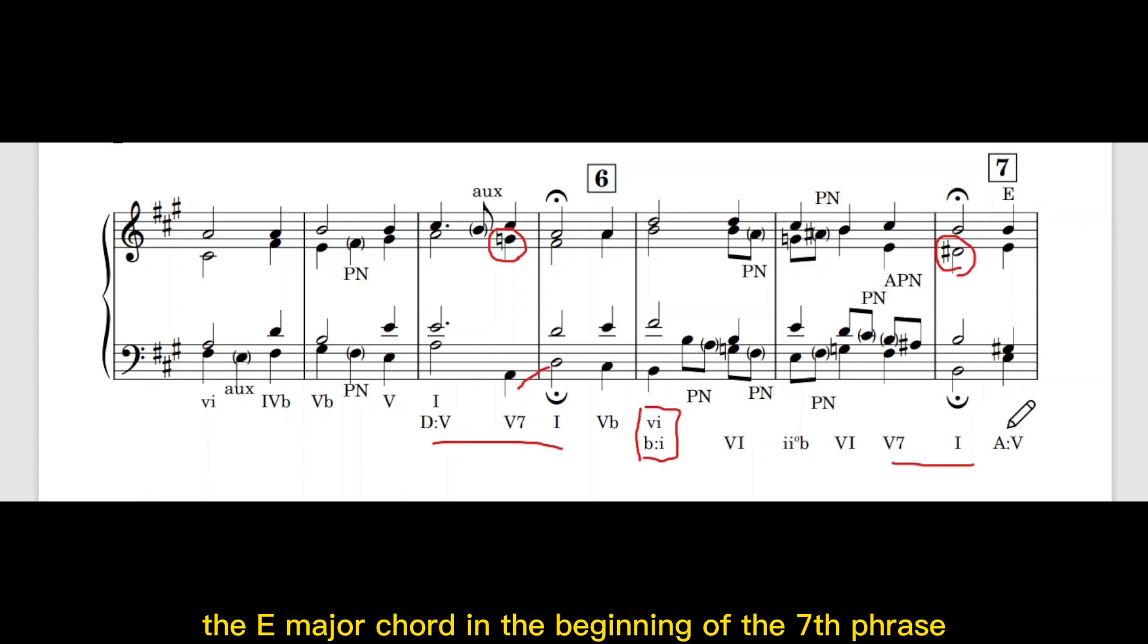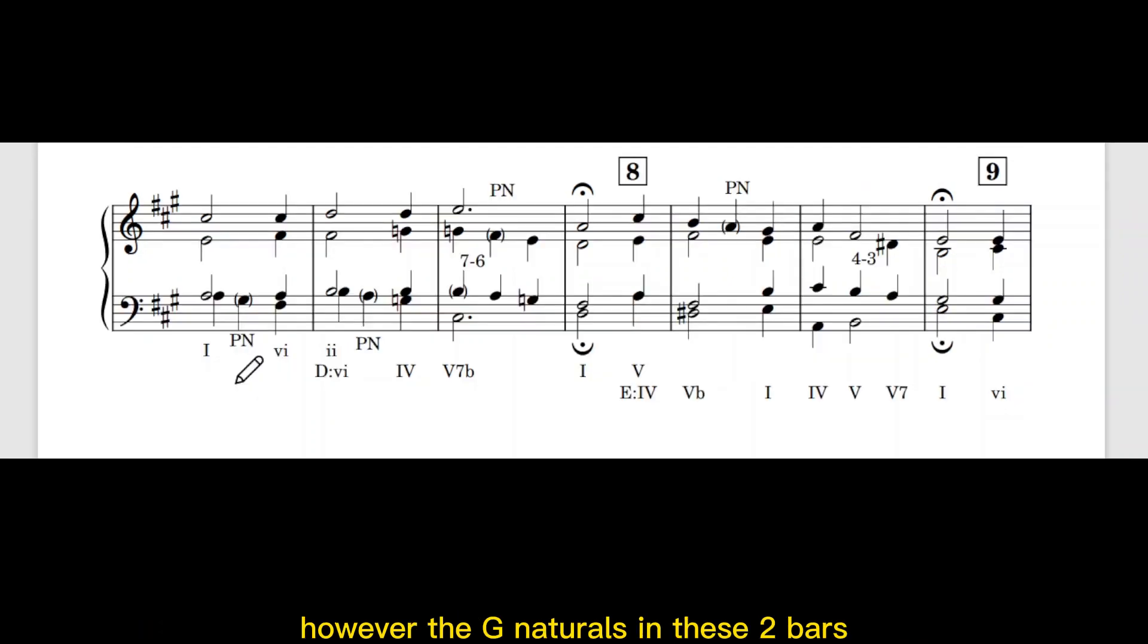The E major chord in the beginning of the seventh phrase proves that the key of A major is back. However, the G naturals in these two bars change the key to D major. Take note that the soprano is going down a fifth. That's why the bass has to be harmonized with the first inversion of 5-7. There is a 7-6 suspension used in the tenor part. The B is prepared by the previous note in the forecord and then comes to the downbeat a 7 above the bass and then resolve downwards to a 6.